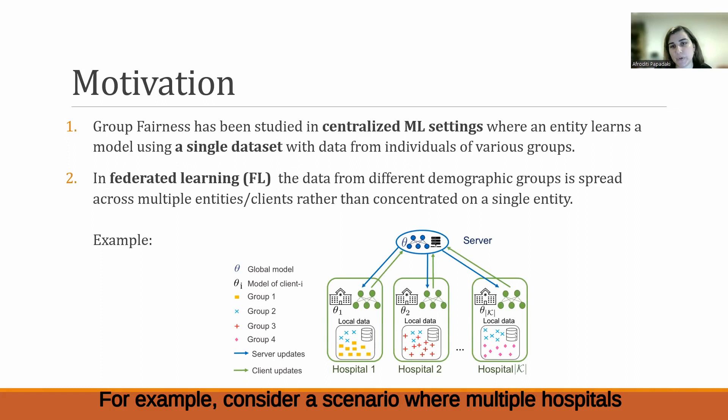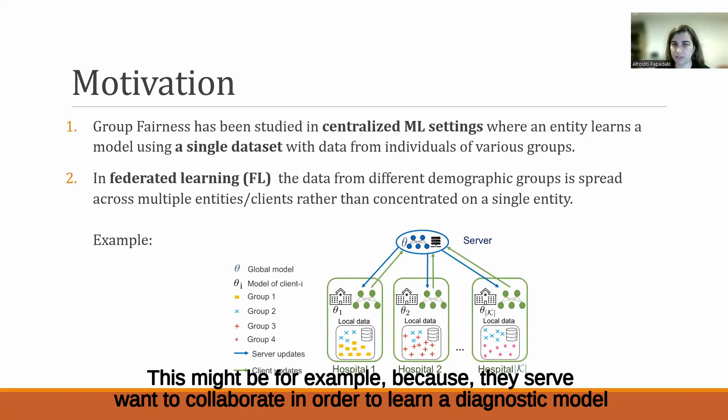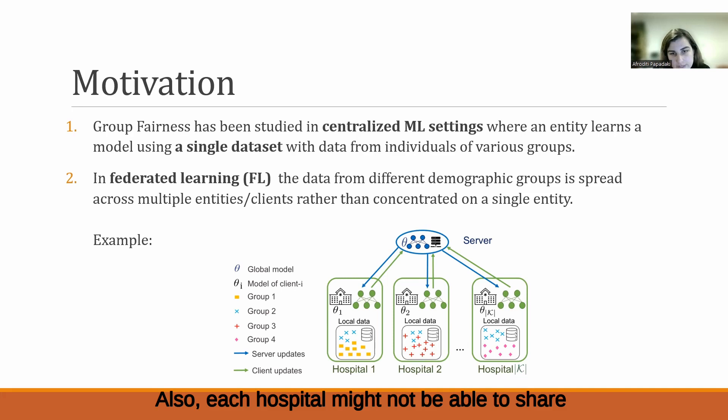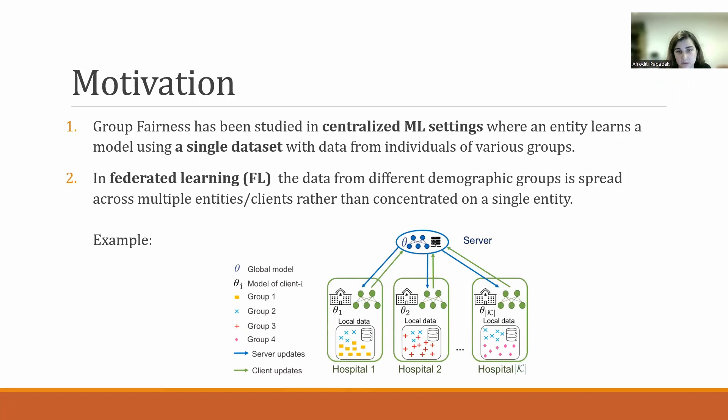For example, consider a scenario where multiple hospitals want to collaborate in order to learn a diagnostic model that is fair across different demographic groups. During the training process, some of the hospitals might have data only from particular demographics, for example because they serve different individuals in particular geolocations. Also, a hospital might not be able to share their own data directly with others due to legal or regulatory challenges such as GDPR.